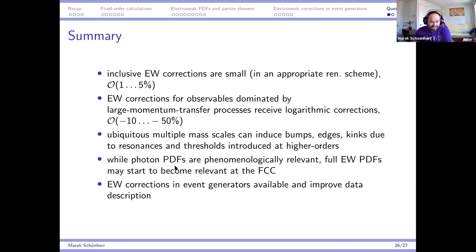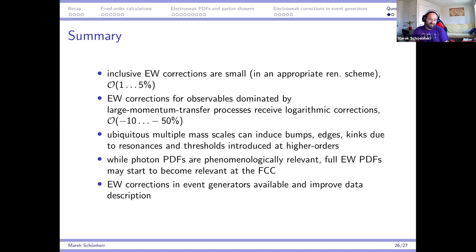Regarding PDFs: photon PDFs are phenomenologically relevant; full electroweak PDFs may become relevant at the FCC but not at the LHC unless measuring at permille accuracy. Electroweak corrections in generators are generally available in some approximation. Exact NLO electroweak corrections exist for a handful of processes but not in general form, due to internal mass scales, resonance shapes, and additional difficulties not present in the QCD sector.